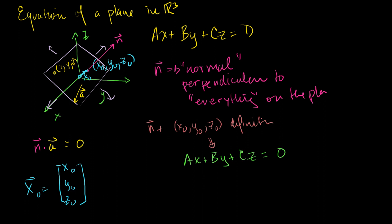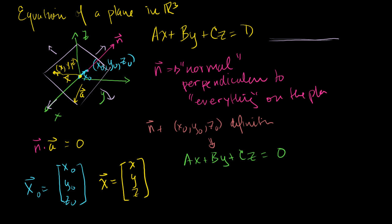Similarly, let me define another vector x, defined by components x, y, and z — some other arbitrary point on the plane. This vector x also does not lie on the plane; it's a position vector going from the origin to specify a point on the plane. You can almost view them as — if the plane was like a coffee table — these vectors go from the origin up to specify points on the plane's surface.